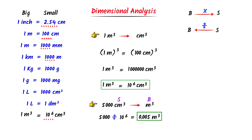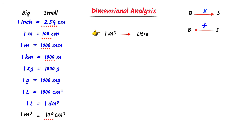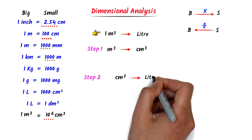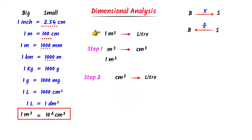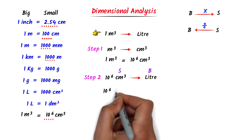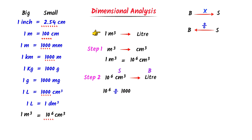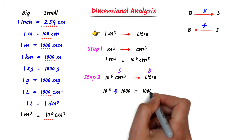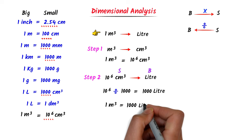Lastly, let me teach you one bonus question: convert 1 meter cube to liters. I will solve it in two steps. Firstly, I convert meter cube to centimeter cube — we already know that 1 meter cube equals 10 to the power 6 centimeter cube. Secondly, I take this 10 to the power 6 centimeter cube. According to the relationship, centimeter cube is a smaller unit and liter is a bigger unit, so I divide 10 to the power 6 by the conversion factor, which is 1000. After calculation, I get 1000 liters. Thus, 1 meter cube is equal to 1000 liters.